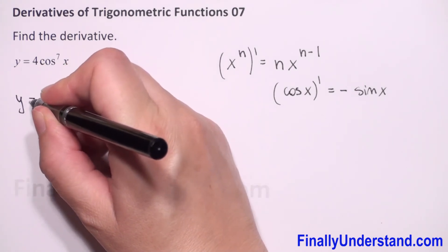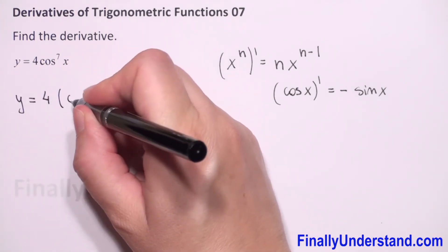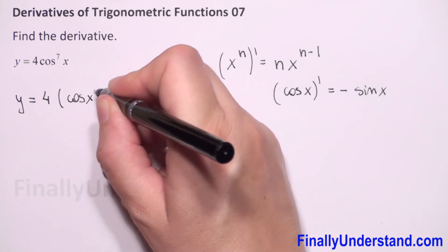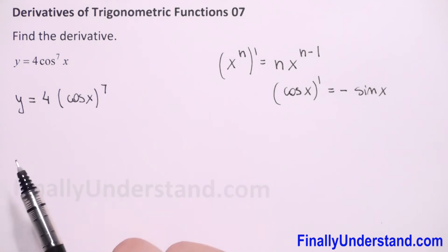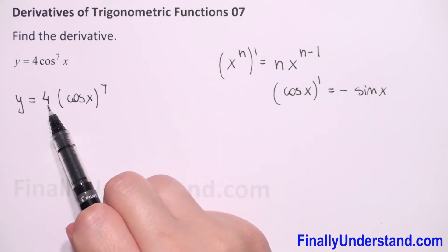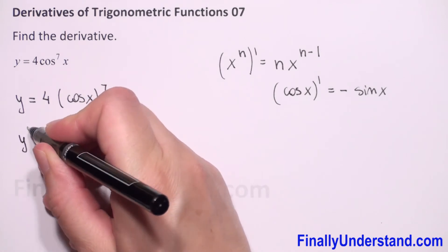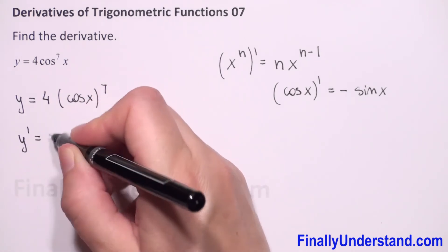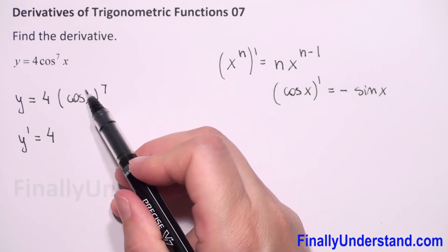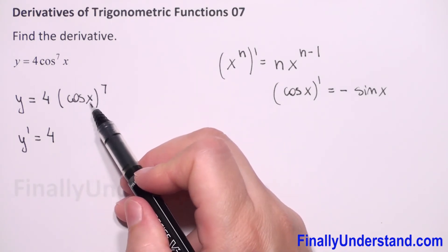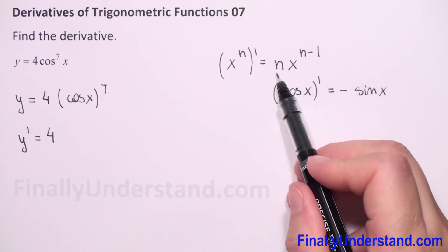First, I will rewrite this function. Because we have cosine to the 7th power, I can write y equals 4 times (cosine of x) to the 7th power. When we have a constant number, we always copy it, so when we find the derivative, we copy the constant 4.